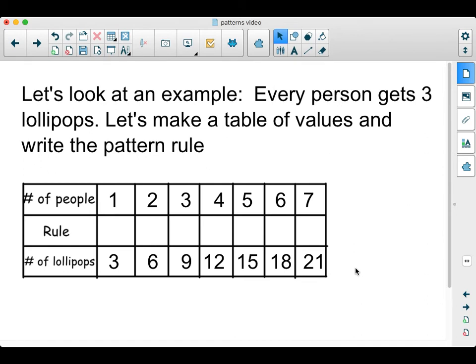So if we look at an example, every person gets three lollipops. This table of values shows this pattern. So if you had one person, you'd have three lollipops. Two, you'd have six total. Three people, nine total lollipops, and so forth.